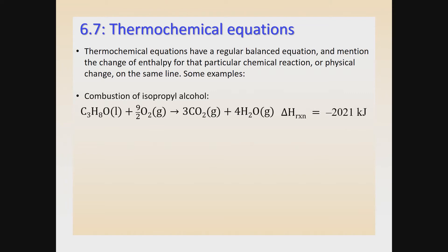So let's talk about what that number means. It has a negative sign, and when you have a delta H that's negative, that means it's an exothermic reaction — it's releasing heat into the surroundings. The value of 2,021 kilojoules is the change of enthalpy for every one mole of isopropyl alcohol that reacts, or for nine-halves moles of oxygen, three moles of carbon dioxide produced, or four moles of water produced. That number is associated with any of the reactants and products with the stoichiometry they have.